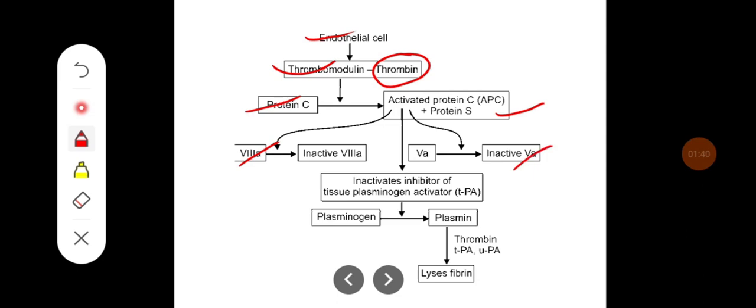They also inactivate the inhibitor of tissue plasminogen activator, that is TPA. Thus, it is going to increase the generation of tissue plasminogen activator that converts plasminogen into plasmin, a strong fibrinolytic, which is going to cause fibrinolysis, releasing lysed fibrin. And the thrombin, tissue plasminogen and urokinase plasminogen also help.